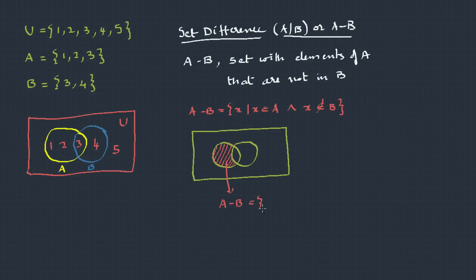And the Venn diagram. So A minus B is just 1 and 2. 3 is the common element, so we have just discarded that.